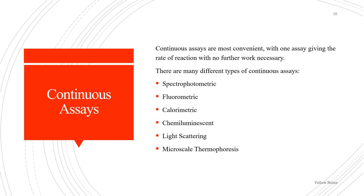Continuous assays are most convenient, with one assay giving the rate of reaction with no further work required. There are many different types of continuous assays: spectrophotometric, fluorometric, calorimetric, chemiluminescent, light scattering, and microscale thermophoresis.